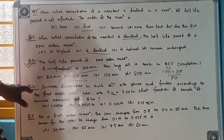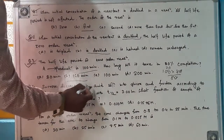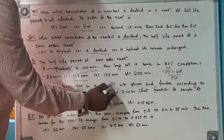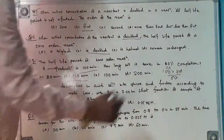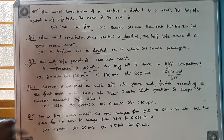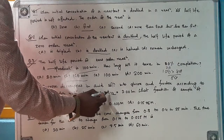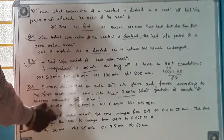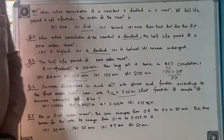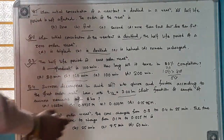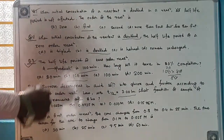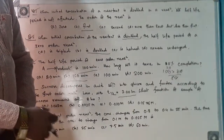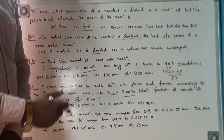Question 4: Sucrose decomposes in acid solution into glucose and fructose according to a first-order reaction with a half-life of 3 hours. What fraction of the sample of sucrose remains after 8 hours? In 8 hours, we count the half-lives: the first half-life is at 3 hours, the second at 6 hours, and then 2 more hours remain after the third half-life would be at 9 hours.